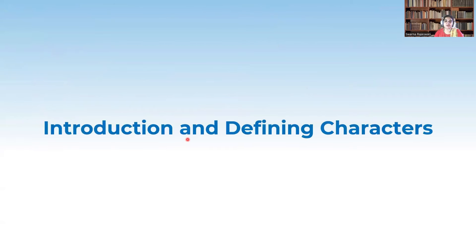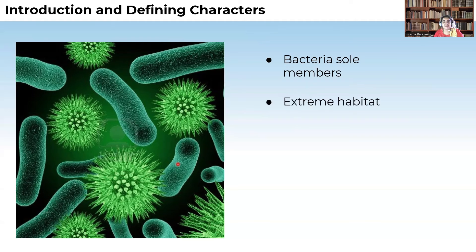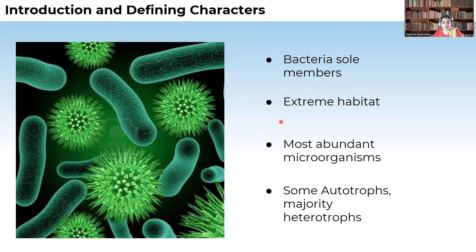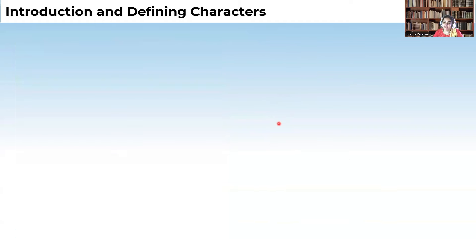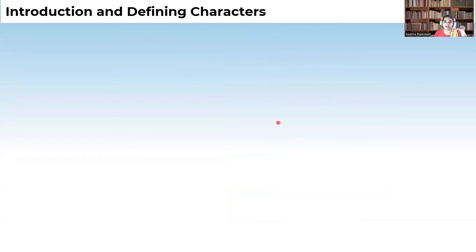Now let us go into our class — Introduction and Defining Characters of the Kingdom Monera. Kingdom Monera includes bacteria, cyanobacteria, archaebacteria, etc. Bacteria are the main members and they live in extreme habitats — extreme hot and extreme cold. Most organisms are microorganisms. Some are autotrophs, but the majority are heterotrophs, meaning they depend on other organisms for food.